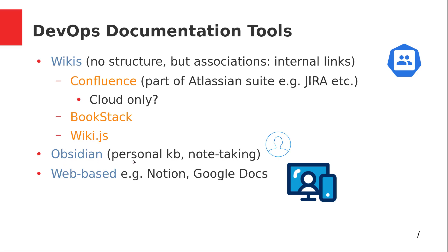Obsidian is more of a personal knowledge base — not really designed to be shared with other people. It's more of a personal note-taking software with a lot of supported plugins. You work on it locally; it uses Markdown files under the hood. You can put them in a hierarchical order, interlink them, and plugins allow you to back up to Dropbox or OneDrive and do all kinds of interesting things.